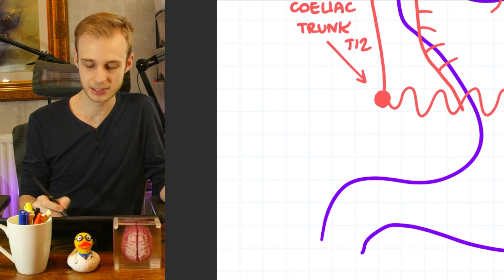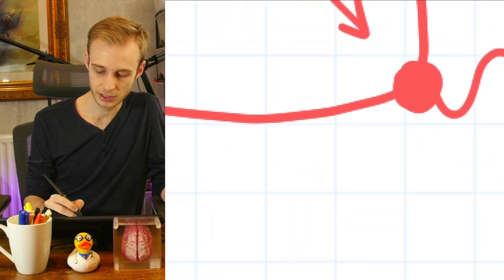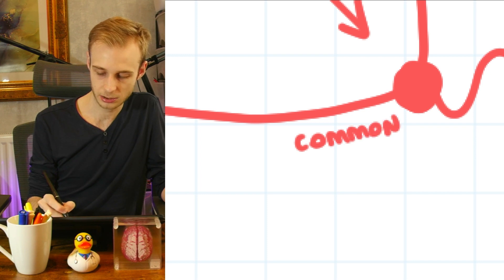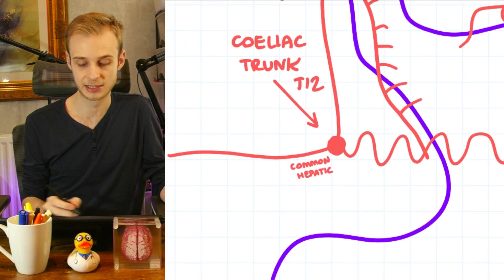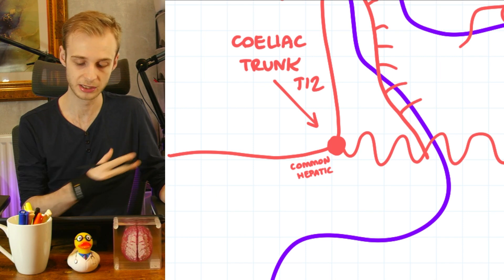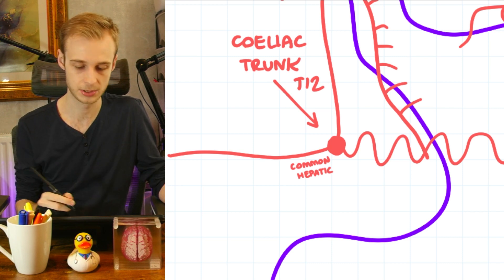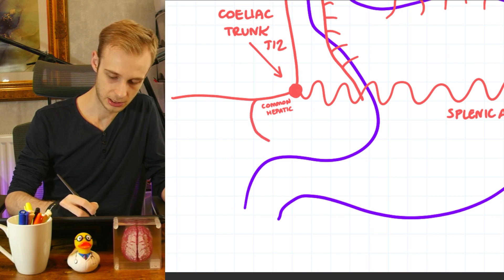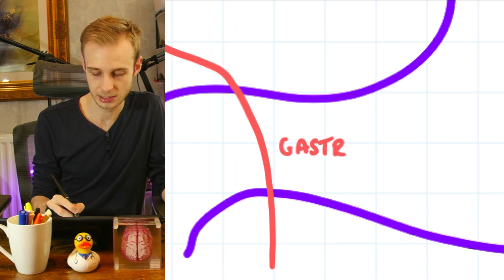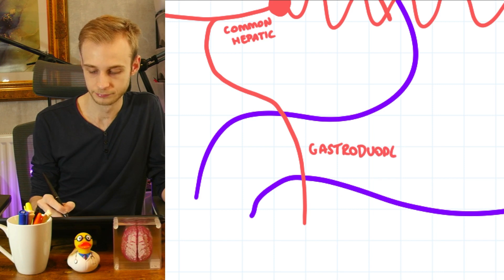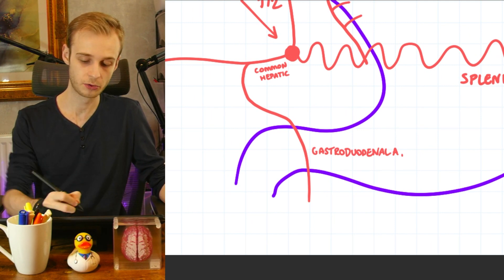Coming back to the celiac trunk, the vessel that travels right is the common hepatic artery. The name tells us two things: hepatic means it's ultimately going to arrive at the liver, and common tells us it's going to split off into daughter vessels as it goes. The first split comes around and down, passing posteriorly to the stomach — this is the gastroduodenal artery. As the name tells us, it's going to supply part of the stomach and then go on to supply the duodenum.